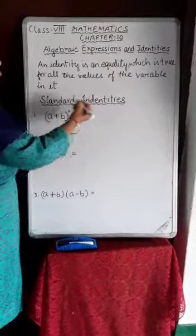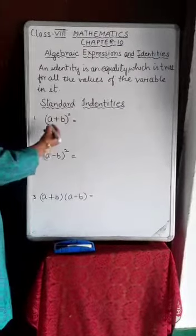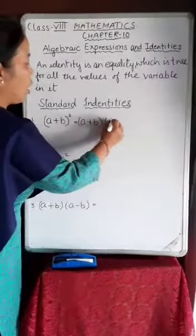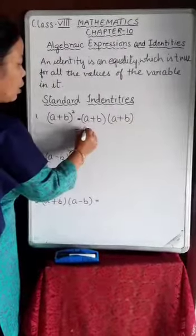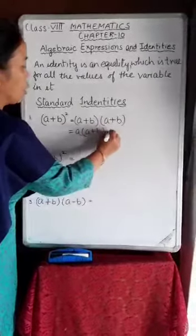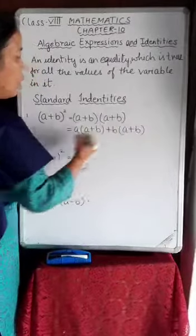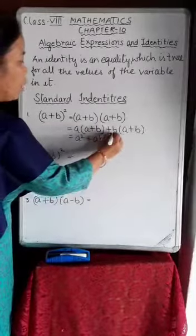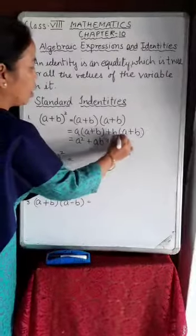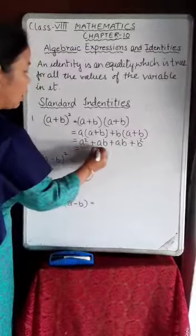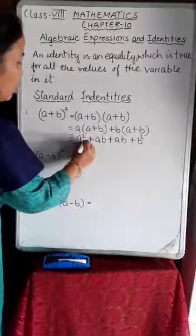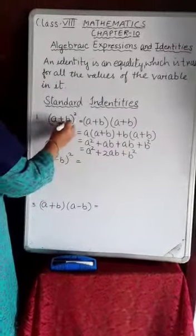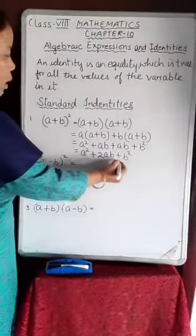The first standard identity is (a + b) whole square. It equals (a + b) multiplied by (a + b). Opening the bracket: a×a = a², a×b = ab, b×a = ab, b×b = b². Since ab and ab are like terms, they add up. So (a + b)² = a² + 2ab + b².